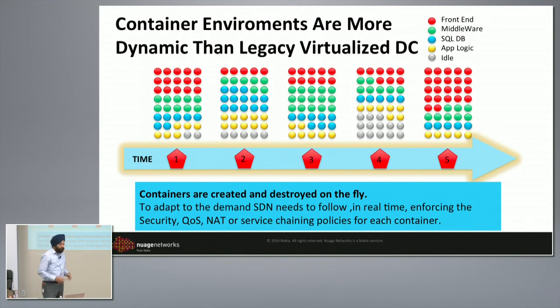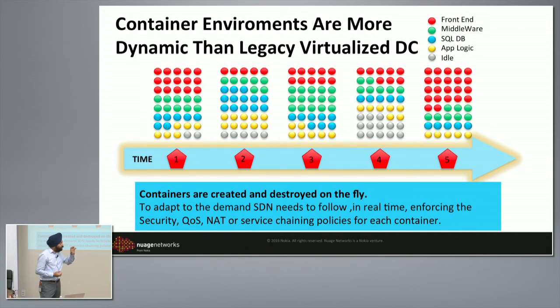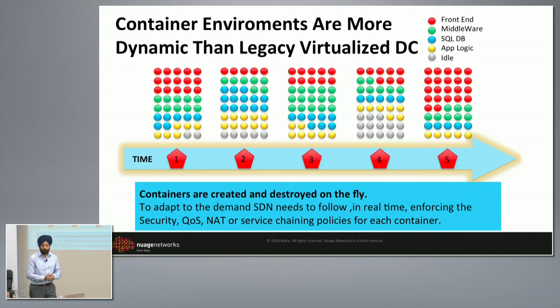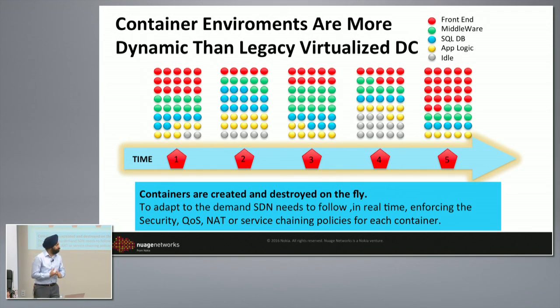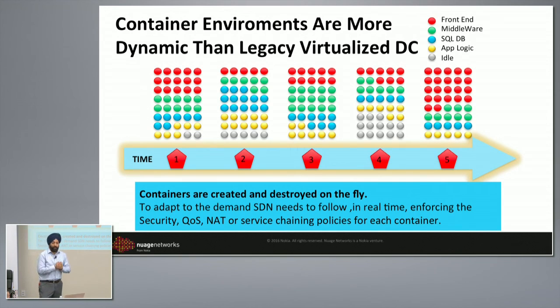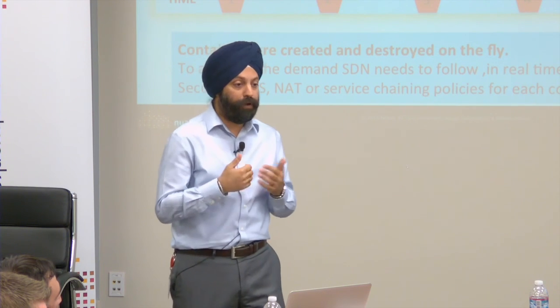We are all in the middle of a very massive transformation in how applications are being developed. Everyone's talking about cloud native application architectures. The first takeaway from these new applications is that there's an order of magnitude difference — maybe two orders of magnitude — between containers and VMs. Where you had maybe tens of VMs on a host, you could have hundreds or thousands of containers per host, meaning your infrastructure is going to get stretched.